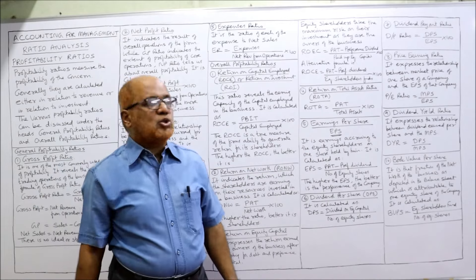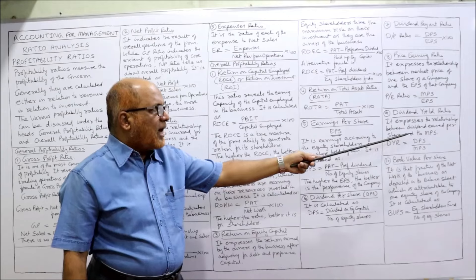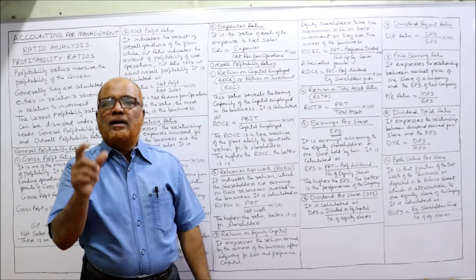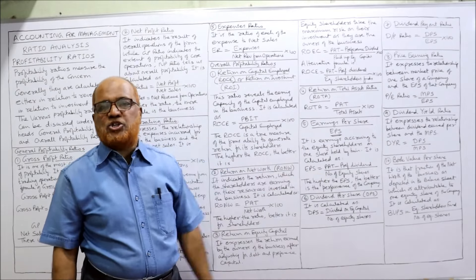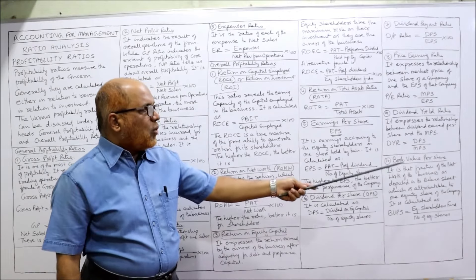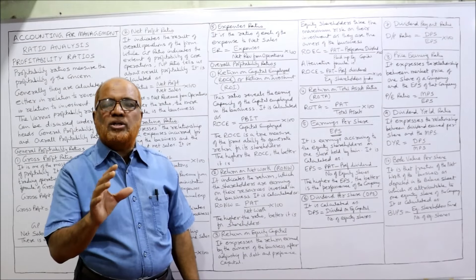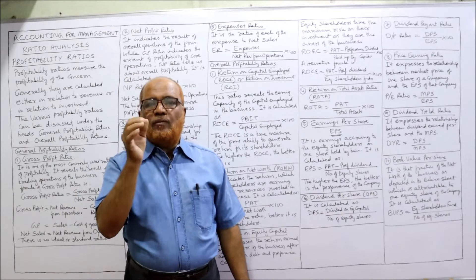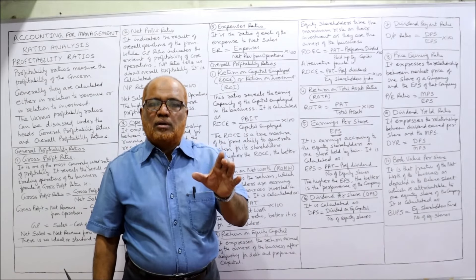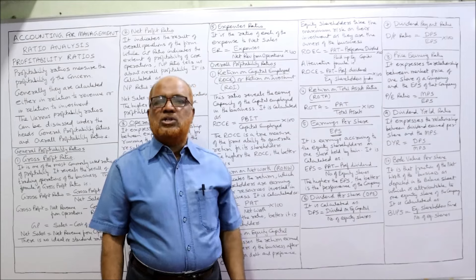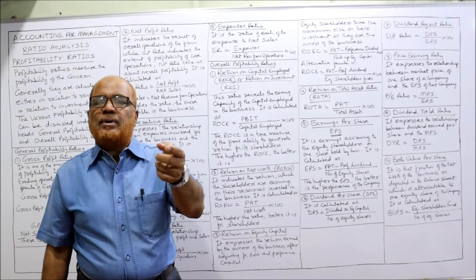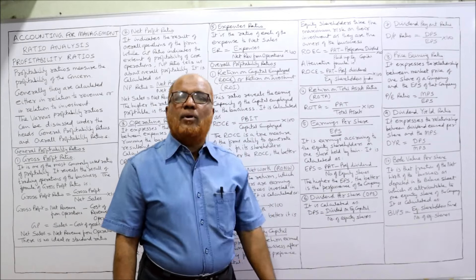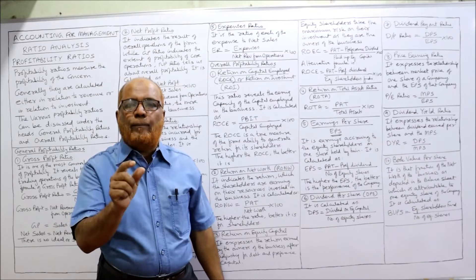Dividend yield ratio expresses the relationship between dividend earned per share and the market price per share. The formula is: DPS (dividend per share) divided by MPS (market price per share). The last and final ratio is book value per share — equity shareholders' fund divided by number of equity shares. Equity shareholders' fund includes equity share capital plus reserves and surplus minus fictitious assets.